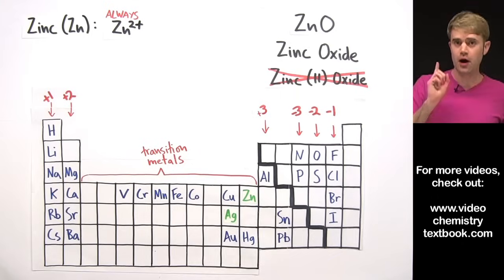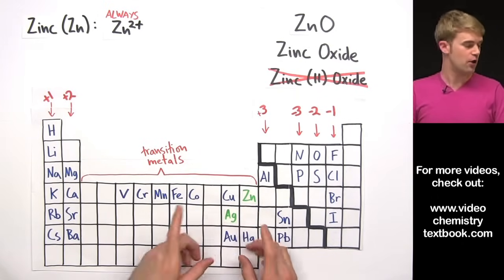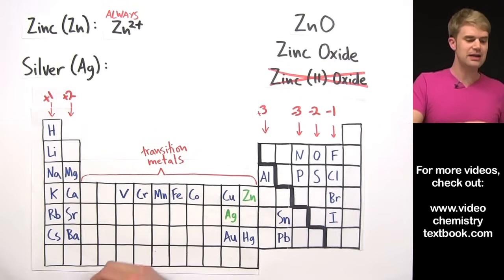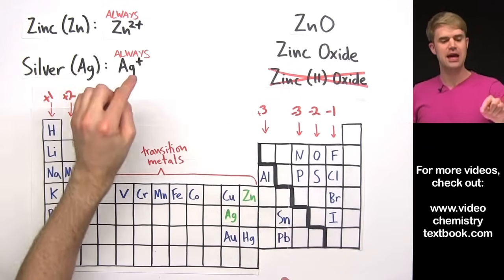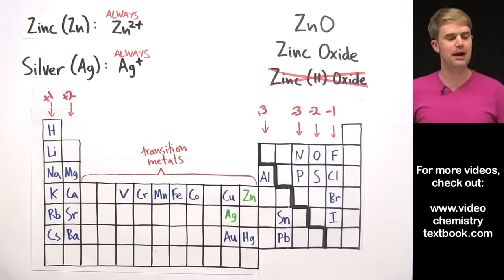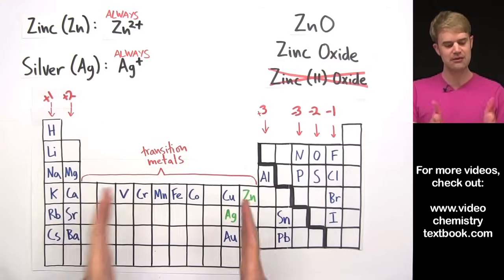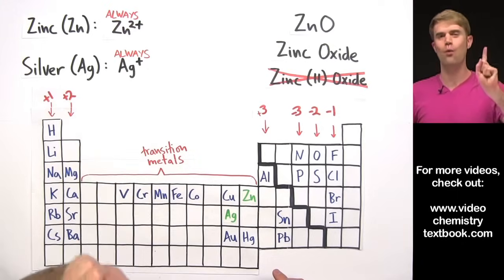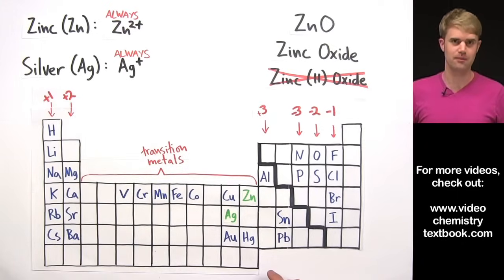We don't call it zinc(II) oxide. Now there's one other element on the periodic table that's a transition metal that only makes one type of ion and that is silver which always makes Ag1+. So, if you're naming a compound that contains zinc or silver, even though they're transition metals, you don't need to use the Roman numerals because they can only make one type of ion.